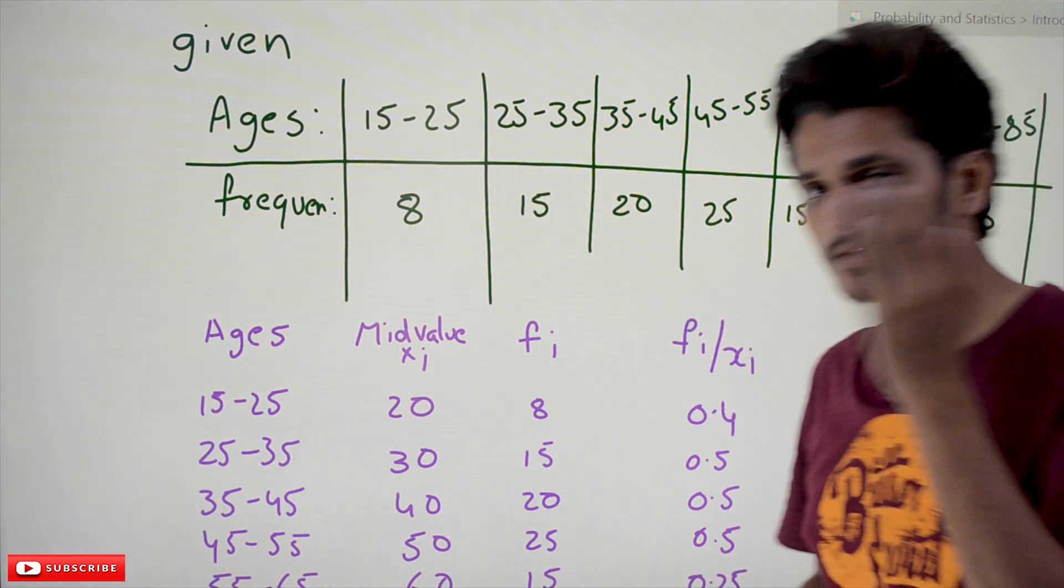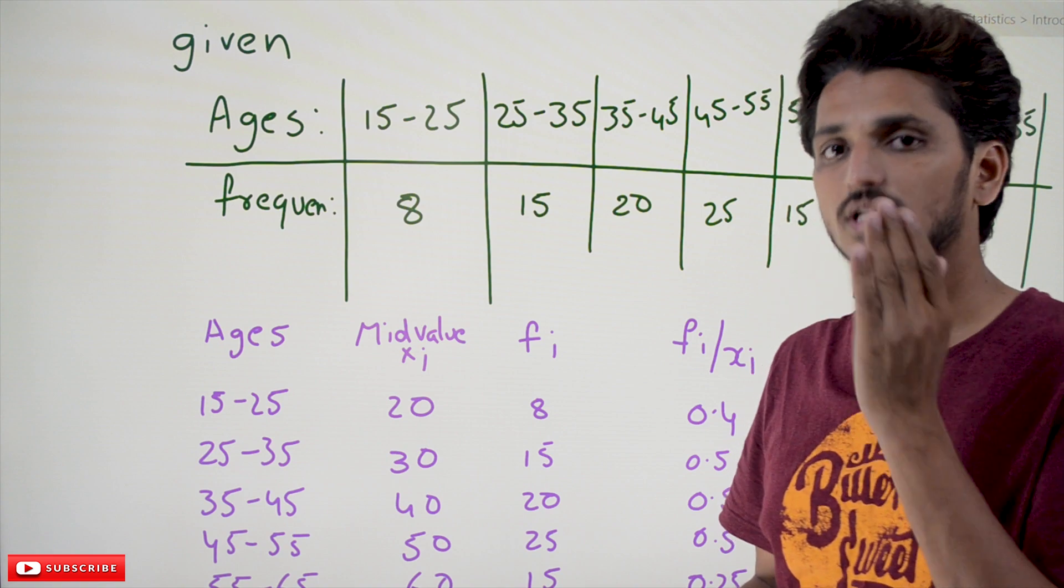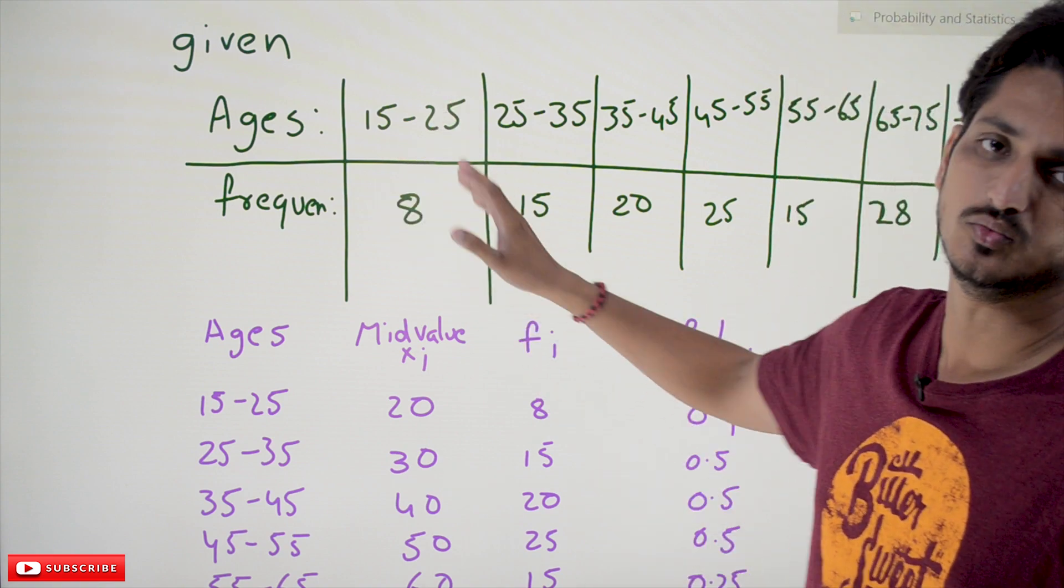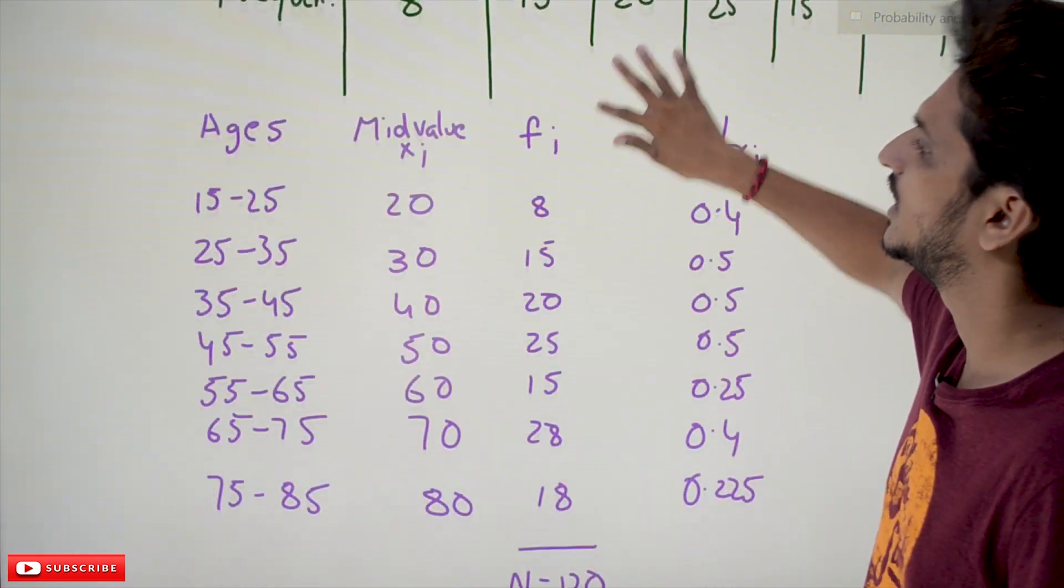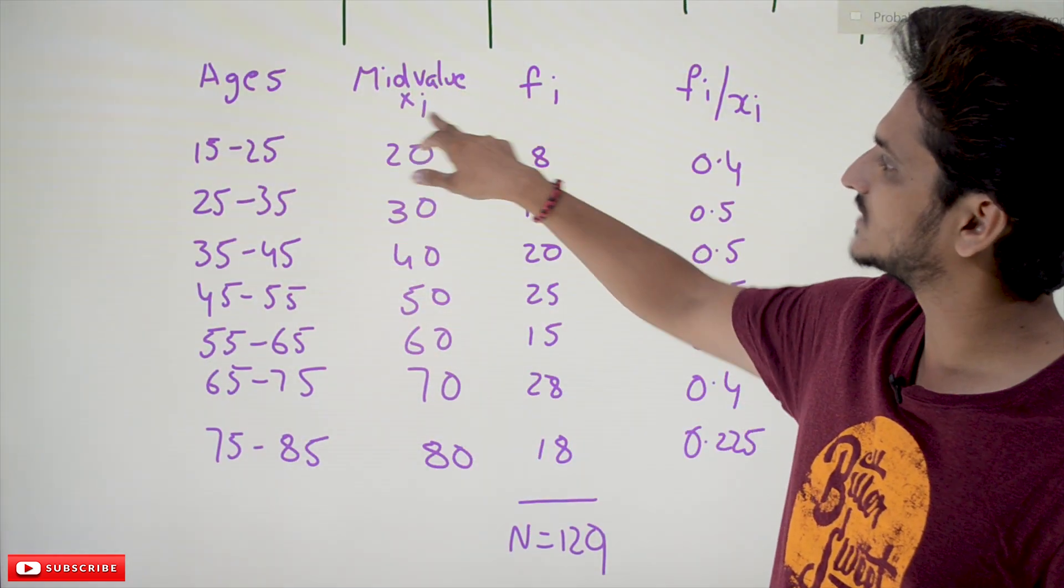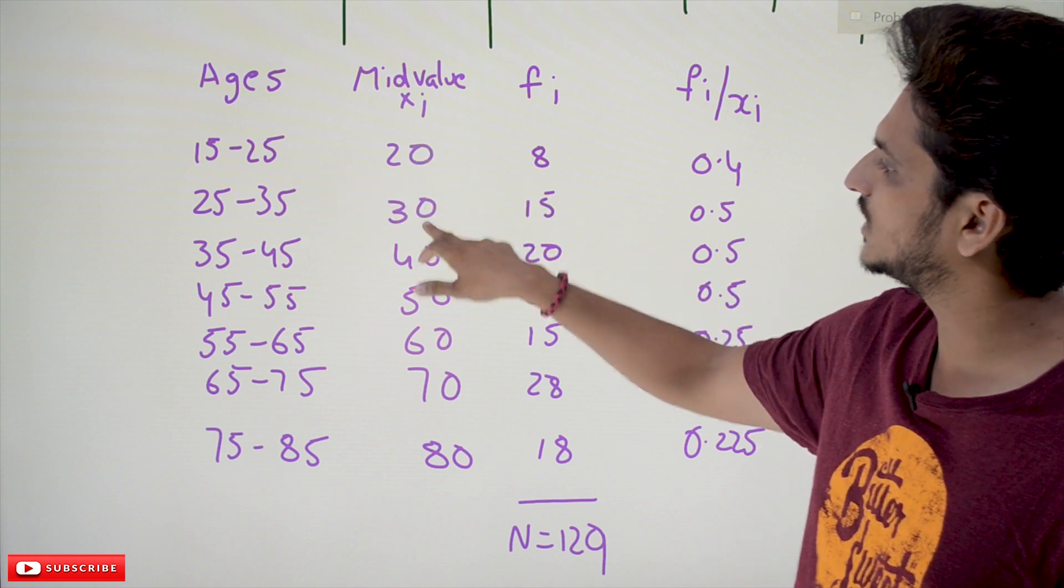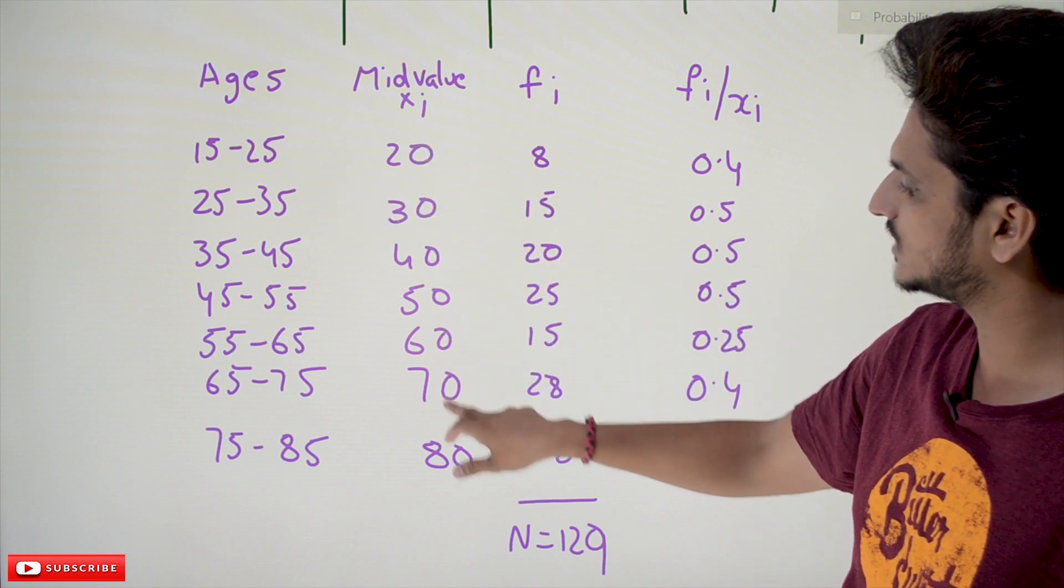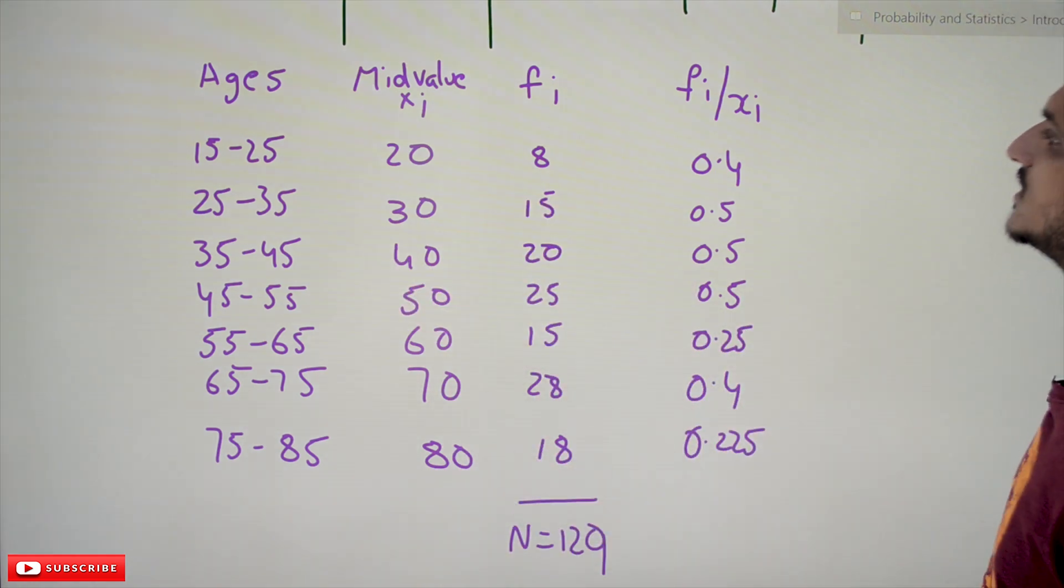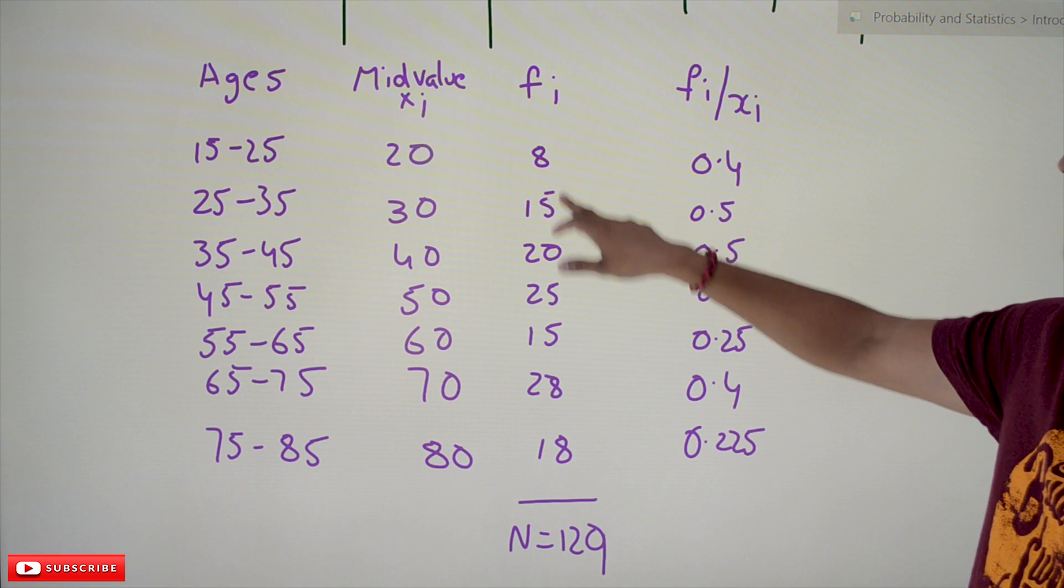Ages are given like this. We are taking the mid value as the XI. For 15 to 25, the mid value is 20; then 30, 40, 50, 60, 70, 80. These are the mid values for the age intervals. Frequency is given as 8, and we are going to calculate FI by XI. Why we are calculating this, you will understand when we discuss the equation.